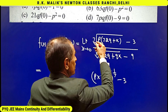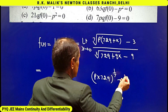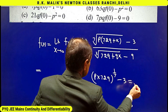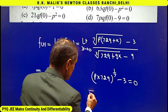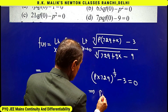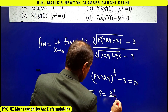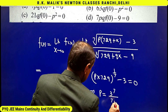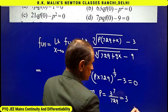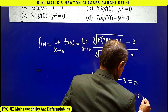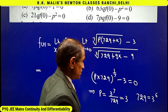Therefore the numerator will also have to tend to 0. This implies p equals 3 to the power 7 upon 729, that is p equals 3, because 729 equals 3 to the power 6.